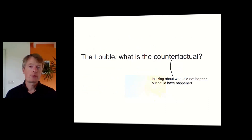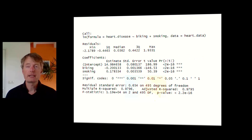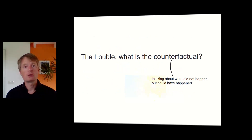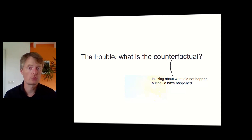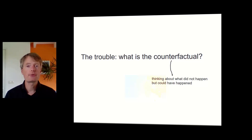The underlying problem is: what is actually the counterfactual? Is that biking coefficient of minus 0.2 actually the effect of not biking, or is it driven by age? In many cases it's not clear what the counterfactual is. The counterfactual is basically what would have happened if the treatment had not been administered.